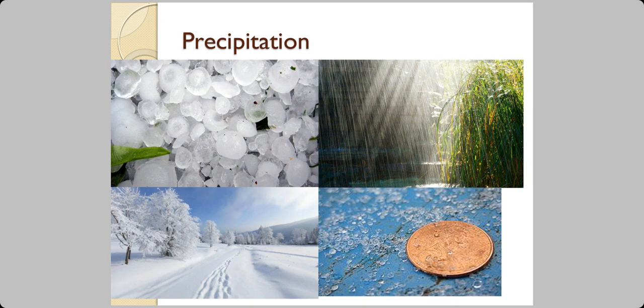When we say precipitation, we have — from top left going clockwise — hail, rainfall, sleet (which is like frozen raindrops), and snow.